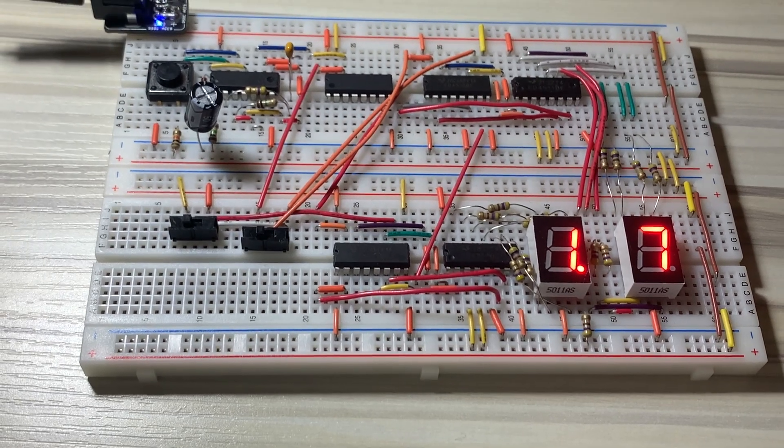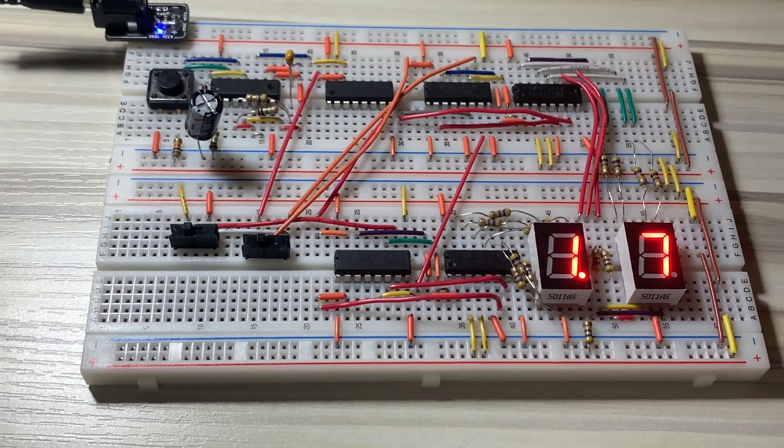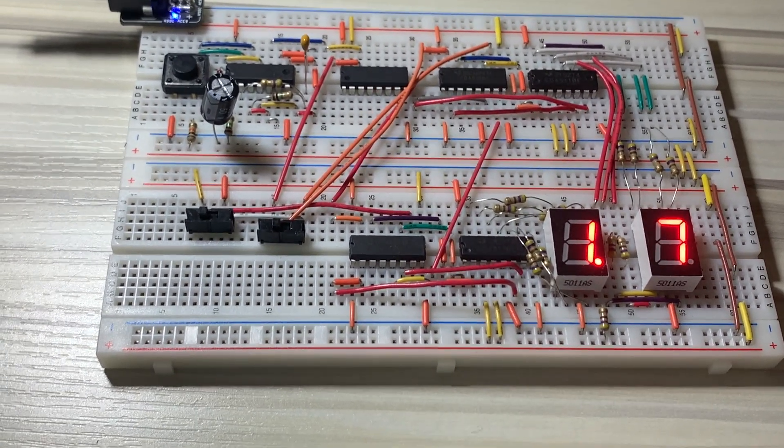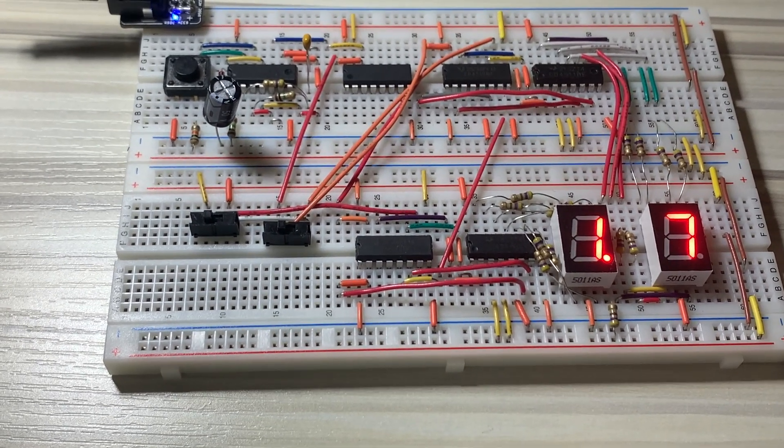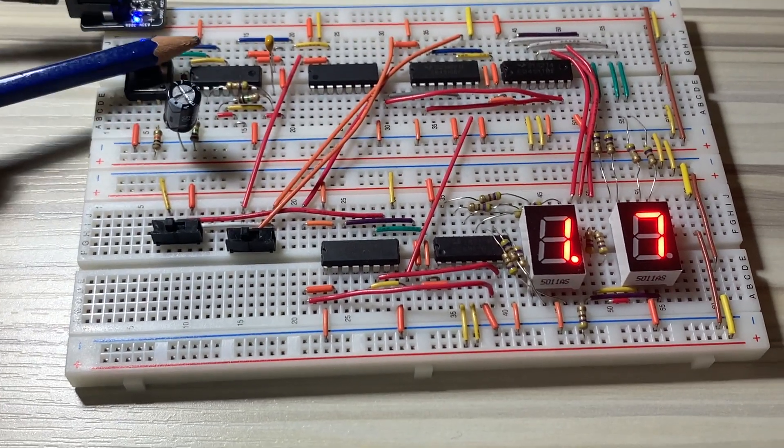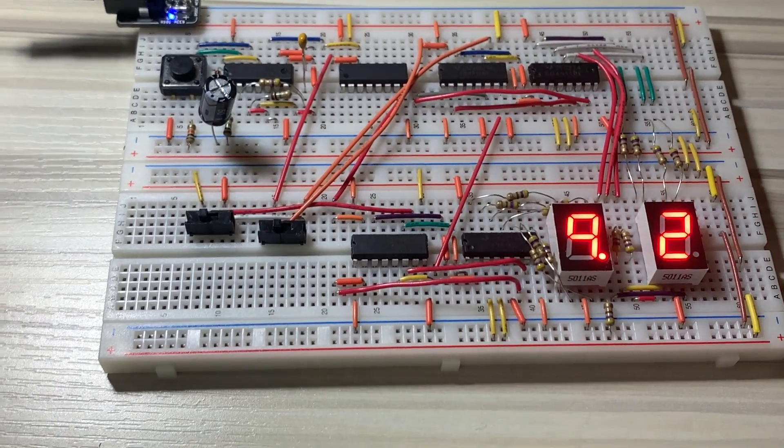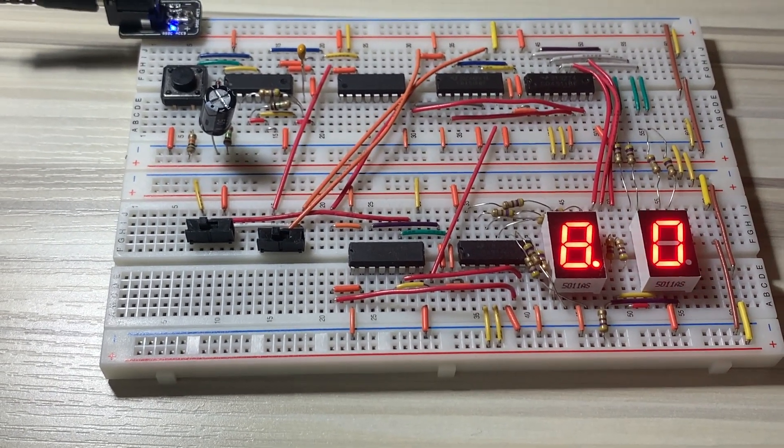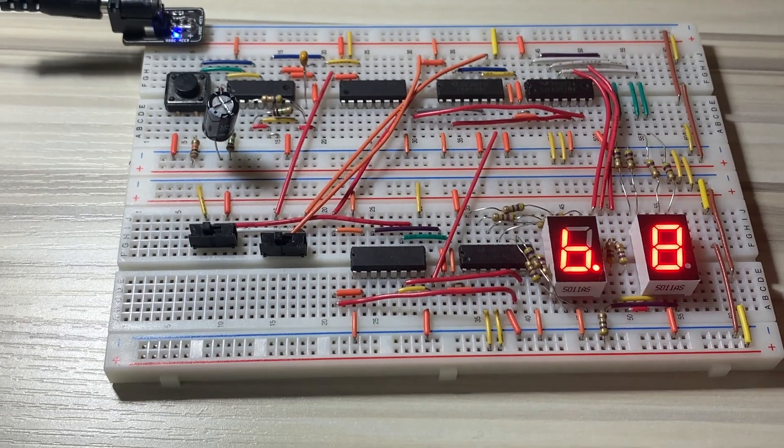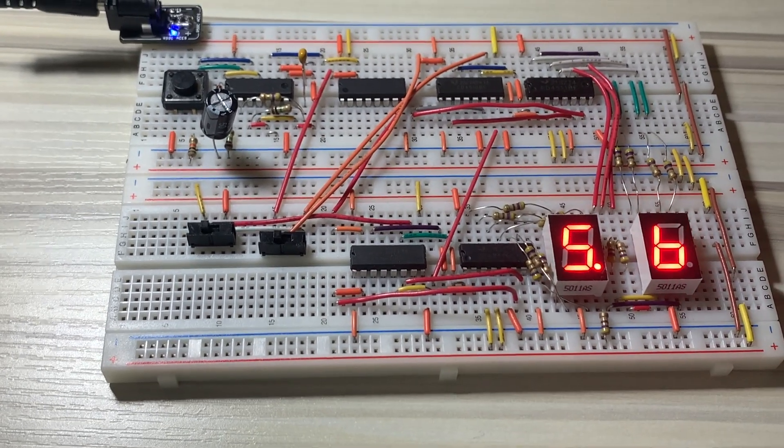This forms the basis of sequential circuits, which are combinational circuits that include memory elements, such as flip-flops. Upon the activation of the momentary pushbutton, the circuit counts from 0 to 9. Since my circuit involves two displays and several other components, it counts from 0 to 9.9, with the inclusion of the decimal point.